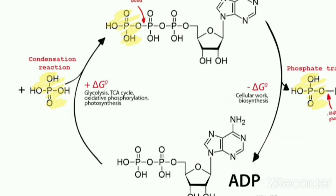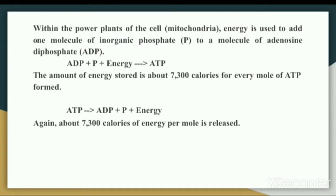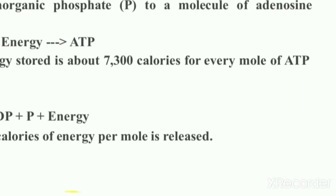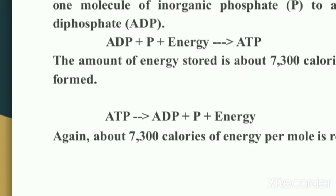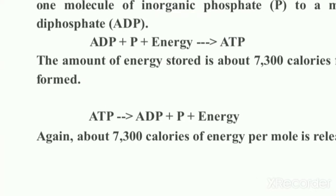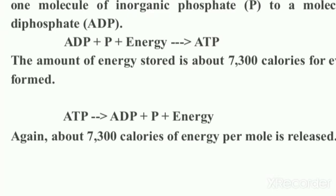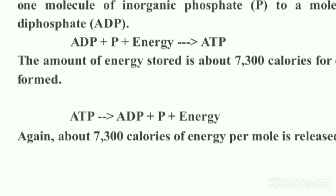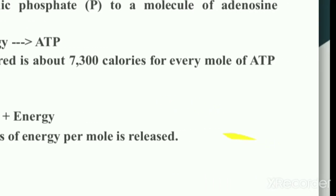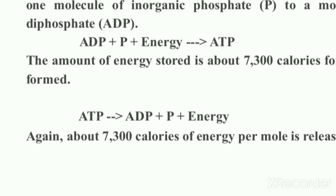Within the mitochondria, energy is used to add one molecule of inorganic phosphate to a molecule of ADP. The reaction is: ADP + inorganic phosphate + energy → ATP. The amount of energy stored is about 7,300 calories for every mole of ATP formed.